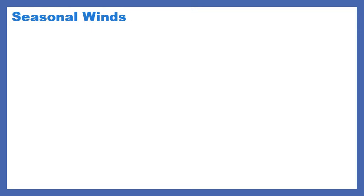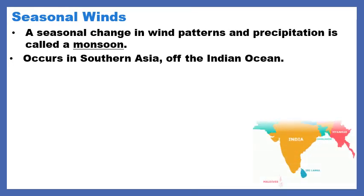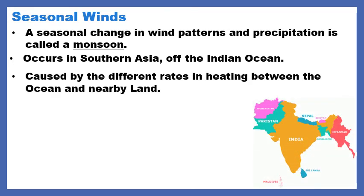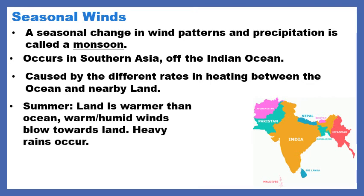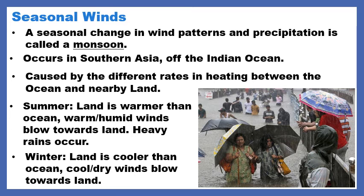Our last factor affecting precipitation is seasonal winds. A seasonal change in wind patterns and precipitation is called the monsoon. These occur in Southern Asia off the Indian Ocean because of the different rates of heating between the ocean and the nearby land — the ocean warms up and cools down five times slower than land. In summer, the land in Southern Asia is warmer than the ocean, so warm, humid winds blow towards land and create heavy, heavy rains. In winter, the opposite happens: the land is cooler, so cool, dry winds blow towards land. So if you're going to Southern Asia, avoid summer — you'll hit monsoon season.